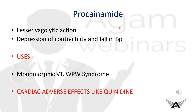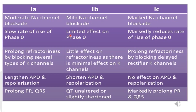Procainamide is used for rate and rhythm control in pre-excited atrial fibrillation, particularly in patients with Wolff-Parkinson-White syndrome developing atrial fibrillation. While most patients with atrial fibrillation are managed with beta blockers or CCBs, other uses of procainamide include monomorphic ventricular tachycardia. Adverse effects are similar to quinidine, including hypotension, TdP, and prolonged QT interval.